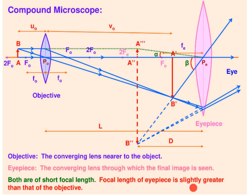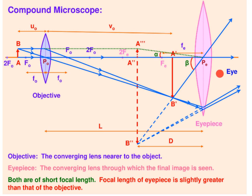The focal length of the eyepiece is slightly greater than that of the objective. The first lens is the objective lens, nearer to the object, and the second lens is the eyepiece, nearer to the final image. The focal length of the objective lens is smaller as compared to the focal length of the eyepiece.